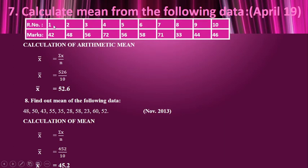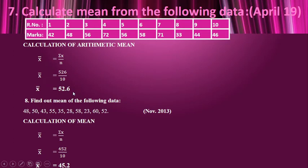Going on to this question, the roll number and marks are given. Roll number is nothing but the serial number of those values, so it will not be taken into consideration — only the marks are considered as x. It is again individual data, so x̄ = σx / n. The total of the marks — 42 + 48 + 56 + 72 + 56 + 58 + 71 + 33 + 44 + 46 — is 526, divided by n = 10. So x̄ is 52.6.